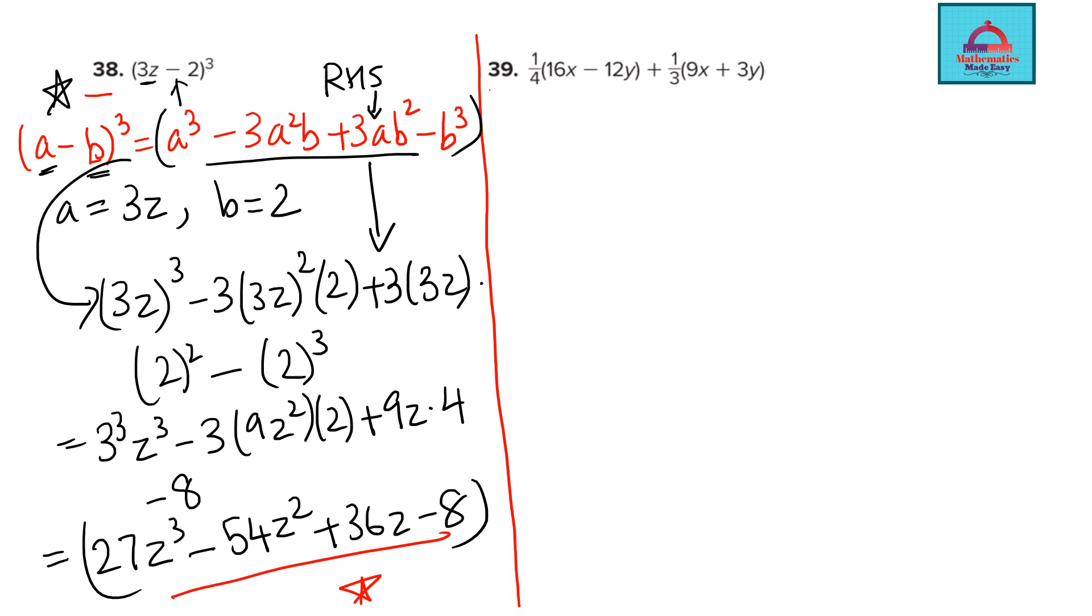So make sure you learn this algebraic identity so that you can solve similar question. Let's do the last question for today, question 39. This is very simple. You see brackets. Wherever you see brackets, apply distributive law. Wherever you see addition, just add them up. So let's solve this.